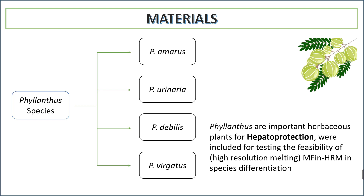Phyllanthus species are important herbaceous plants for hepatoprotection. They have properties related to hepatoprotection and secrete certain chemicals that assist with digestive and liver-protective functions.